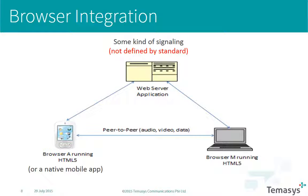One reason signaling is left open is it allows people to repurpose existing components — if you've already got a voice over IP IP PBX system or a stack built on Asterisk, you can get up and running with WebRTC quickly by repurposing your existing signaling infrastructure. Temesys felt this wasn't the best way to take the technology forward, so starting in 2012 we invented our own way of doing signaling. That's really why there's a server — you need some way of connecting the two peers and doing session management.